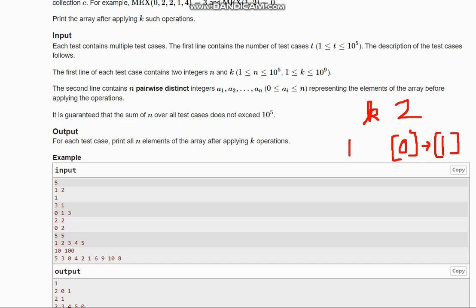Now in the second case we have three elements, k is 1, and we have 0, 1, 3. For 0 we take MEX of 0, 1, 3. MEX of 0, 1, 3 is 2. So now the array is 2, 1, 3. Here MEX of 1 will become 0.